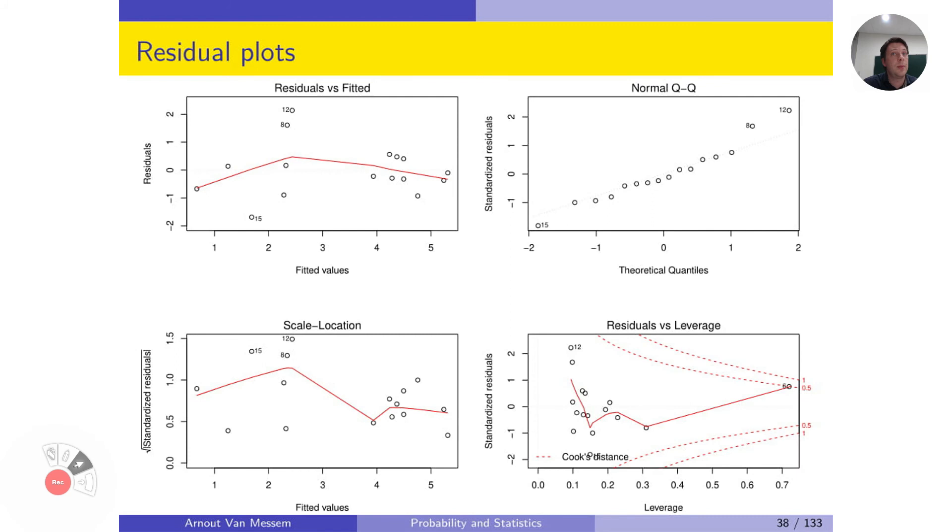Then we have to check back with the assumptions. So the first assumption is normality, which seems to be pretty okay. They follow a straight line. The second assumption was homoscedasticity, which also seems better now. So there is no longer a pattern to be seen in the plot.